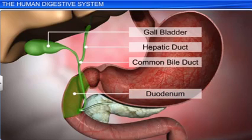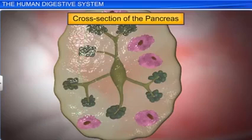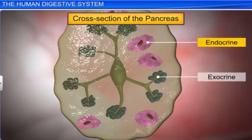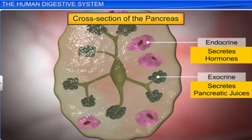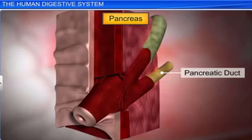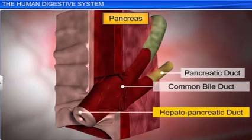Apart from the liver, the digestive glands also include the pancreas. Situated in the duodenum, the pancreas is a compound and elongated organ consisting of exocrine and endocrine parts. While the exocrine portion secretes an alkaline pancreatic juice containing enzymes, the endocrine portion secretes hormones such as insulin and glucagon. The pancreatic duct, which carries the pancreatic juices from the exocrine portion, joins the common bile duct, and both of them open into the duodenum as the hepato-pancreatic duct, which is guarded by the sphincter of Oddi.